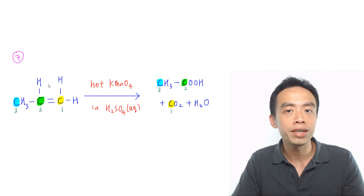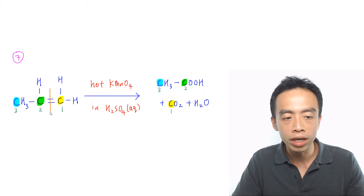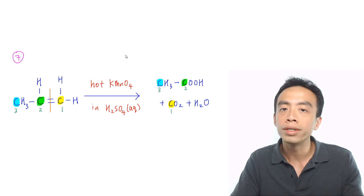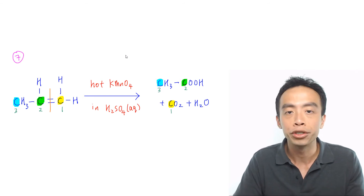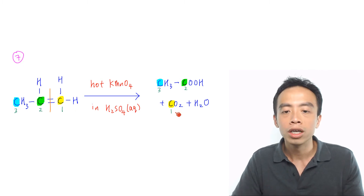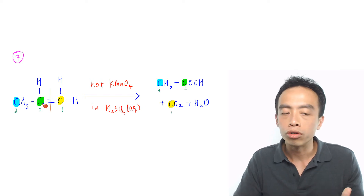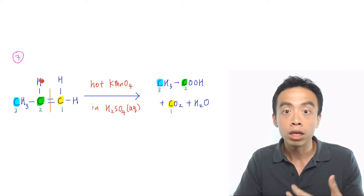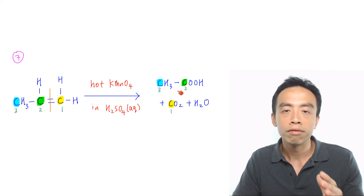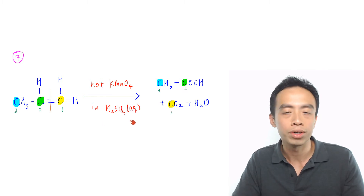Must-know reaction number 7 for alkene is the strong oxidation of alkene, which results in the breaking of the double bond. The products formed depend on the groups attached to the carbon. When carbon number 1 is bonded to 2 hydrogens, it will be oxidized to CO2 and water. When carbon number 2 is bonded to 1 R group and a hydrogen, it will be oxidized to an acid group. The reagents and conditions for this strong oxidation are hot KMnO4 in aqueous H2SO4.